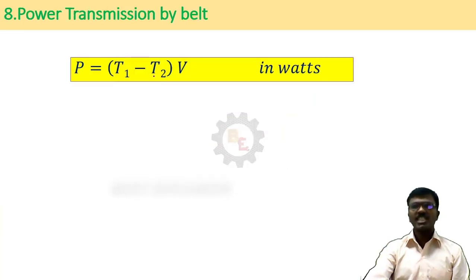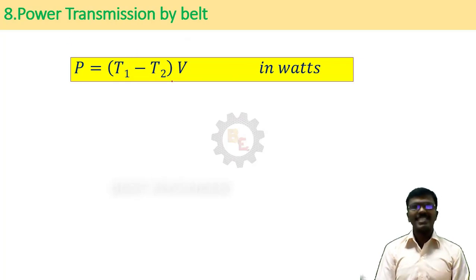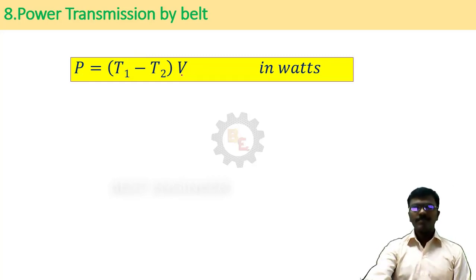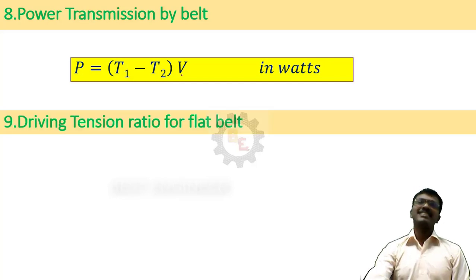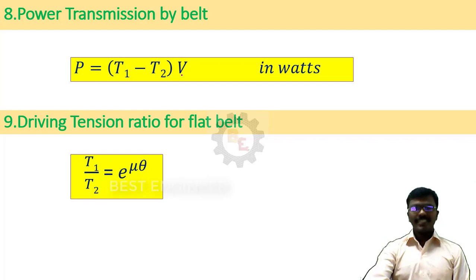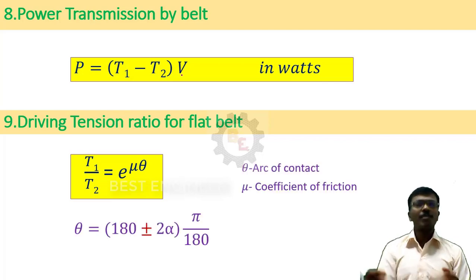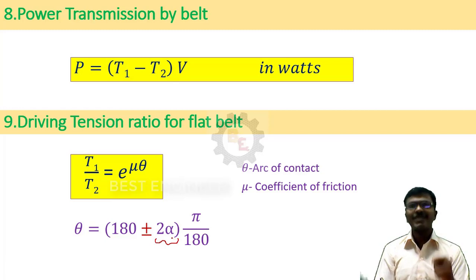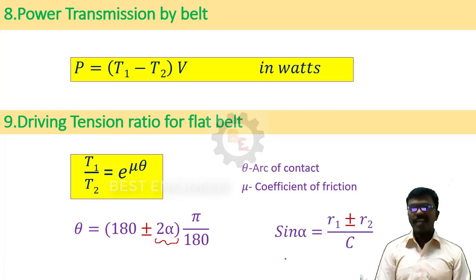Next step: find the power transmission using the formula: Power = (T1 − T2) × v, where v is the linear velocity found earlier. Ninth step: find the driving tension ratio for the flat belt drive using T1/T2 = e^(μθ), where μ is the coefficient of friction and θ is the angle of contact. The angle of contact is found from 2α where sin(α) = (R1 + R2) / C, with C being the center distance and R1, R2 the radii of the pulleys.